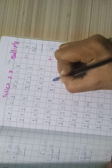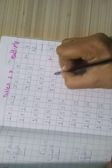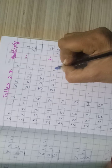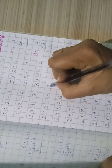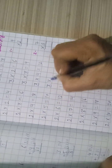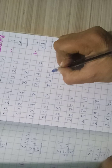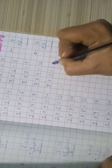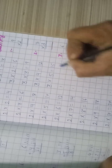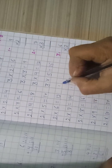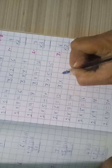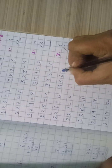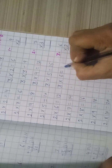Three, four, twelve. Three, five, fifteen. Three, six, eighteen.